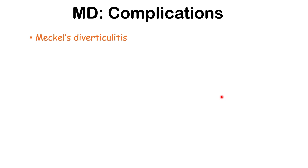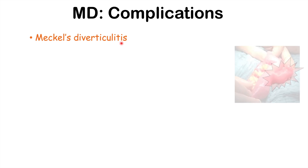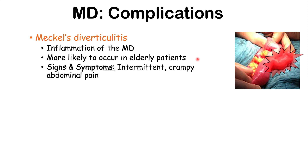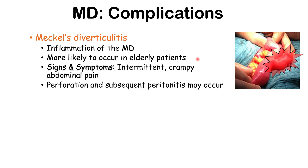Another complication is Meckel's diverticulitis — inflammation of the Meckel's diverticulum. This is more likely to occur in elderly patients. If an older patient still has their Meckel's diverticulum and it hasn't been surgically removed, they are at risk for diverticulitis, which presents with intermittent, crampy abdominal pain. Meckel's diverticulitis can also lead to perforation: the inflammation causes expansion and edema of the diverticulum, which can break through the wall, increasing the risk for peritonitis.